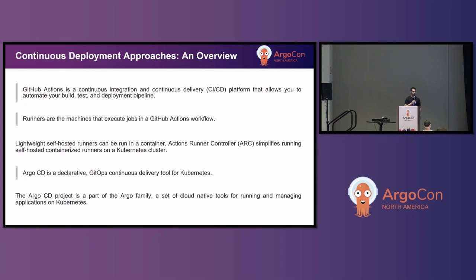Just an overview of the deployment tools used for this experiment. First is the traditional continuous deployment tool — as an example, GitHub Actions — which is a CI/CD platform for building, testing, and deploying software. To run those pipelines, we need something called runners, which are basically the machines where those tasks are executed.